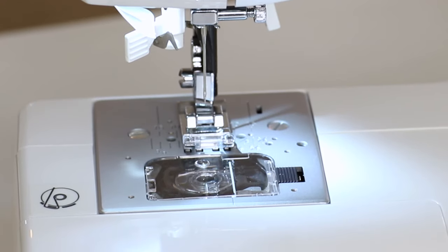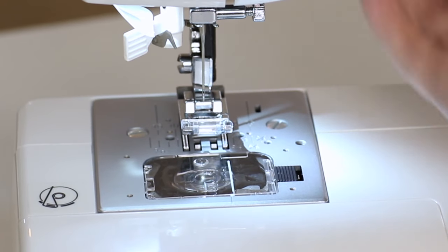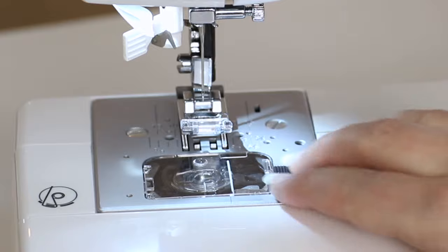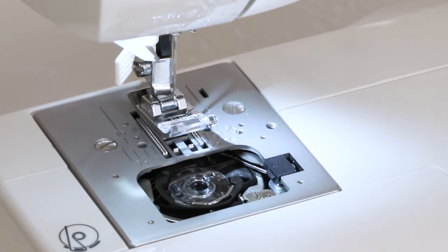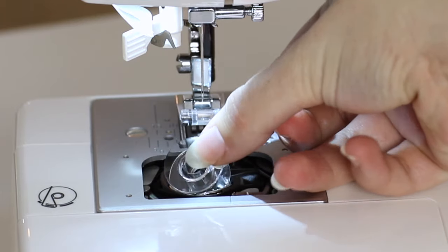Now it's time to wind a bobbin. Raise the presser foot and move this little black button to the right to pop off your clear view cover and retrieve your bobbin.